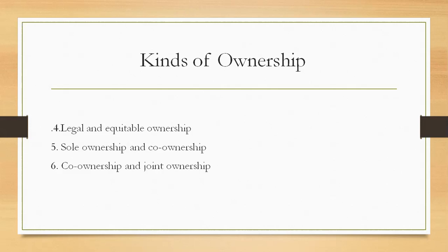For example, if a property belongs to A and B in equal shares, and it is a case of ownership in common, on the death of A, half the property will pass to the heirs of A, the other half remaining with B. But if A and B are joint owners, then B would be entitled to the whole property and the heirs of A would get nothing. This basic difference between co-ownership and joint ownership is what you need to know.